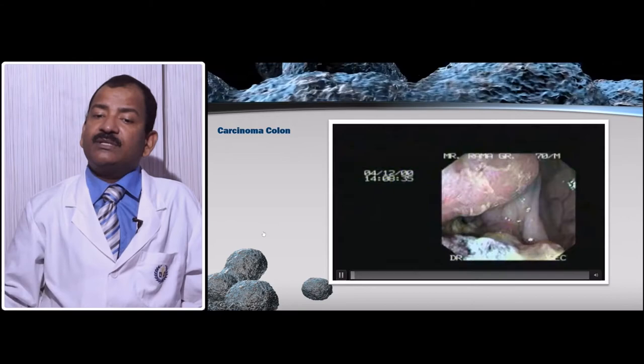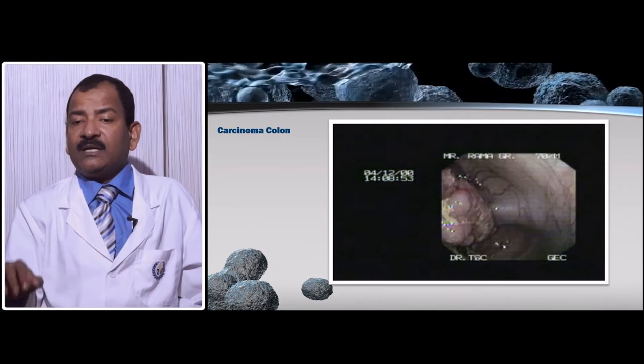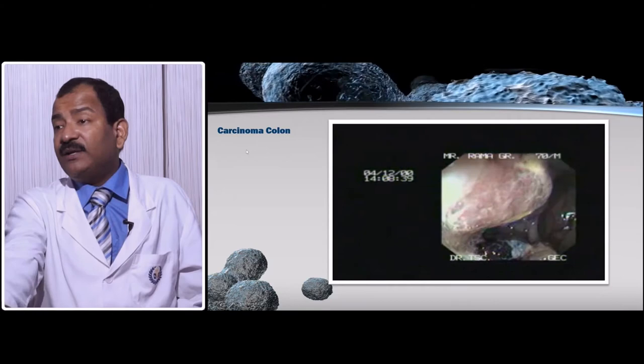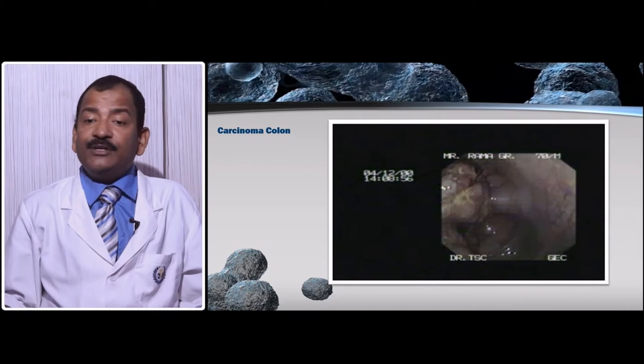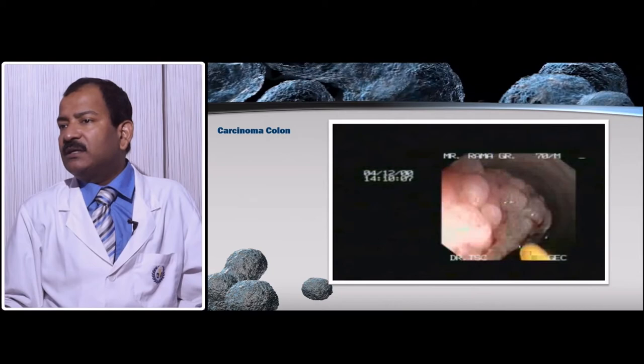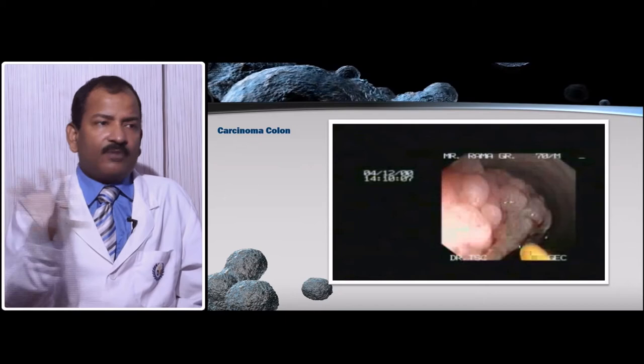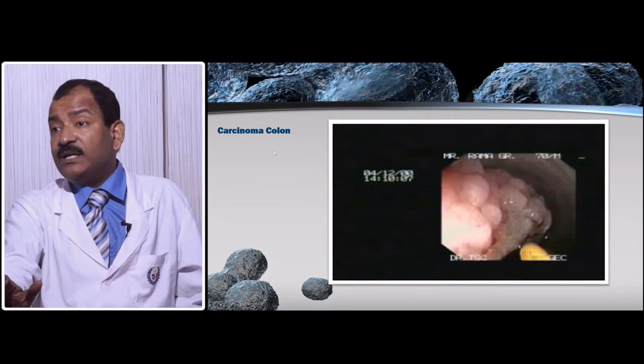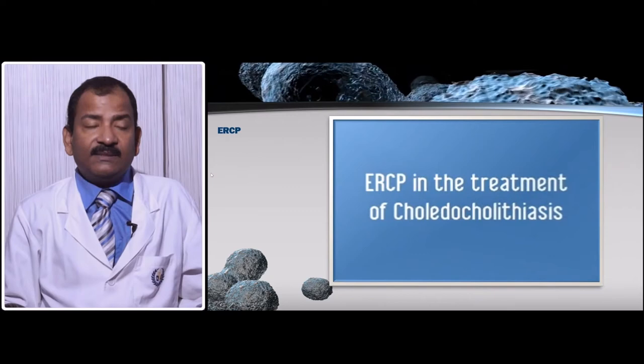Carcinoma of the colon presents as a cauliflower-like growth — take a biopsy and come out. Colonoscopy is very important even if you are doing laparoscopy, since laparoscopy has no tactile feedback. Complete colonoscopy and tattooing of the tumor is required so that during laparoscopy you can decide how much colon to resect. In open surgery you can palpate the tumor, but in laparoscopy colonoscopy is essential for marking resection margins.